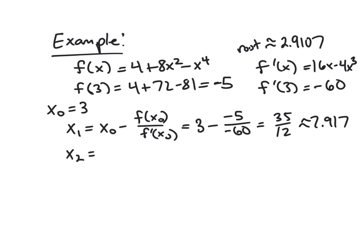So let's go at least one more step and see what we end up with here. So x2 then would be x1 minus f of x1 over f prime of x1. So here, x1, of course, is roughly 2.917 minus, so f of x1, so f of 35 twelfths is about negative 0.3125, and the derivative at that point is roughly negative 52.58.